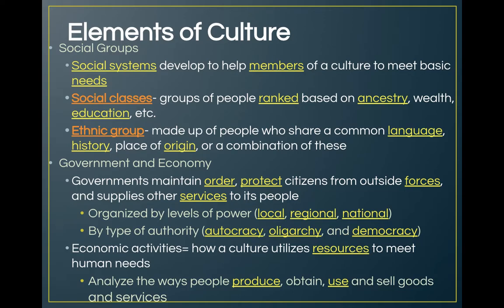In cultures, there are different social groups. Social systems develop to help members of a culture meet basic needs. In many cultures, there are social classes — a ranking of people based on wealth, ancestry, or education. For example, the Indian caste system is based on ancestry, but the higher groups in the ancestral hierarchy also tend to have the higher wealth.